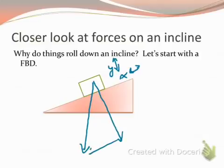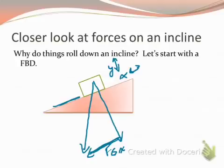When we talk about why things roll down an incline, it's because we have a component of our weight that's acting in the same direction as the incline. Notice the incline and this x-component of the weight are parallel to each other. So things roll down an incline because there's a force acting in the direction of our motion.